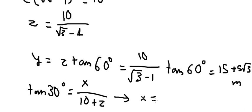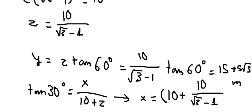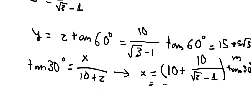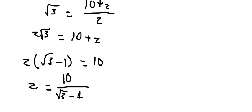So X is equal to 10 plus Z. We substitute and calculate to get X equals 10 plus Z multiplied by tan 30 degrees.